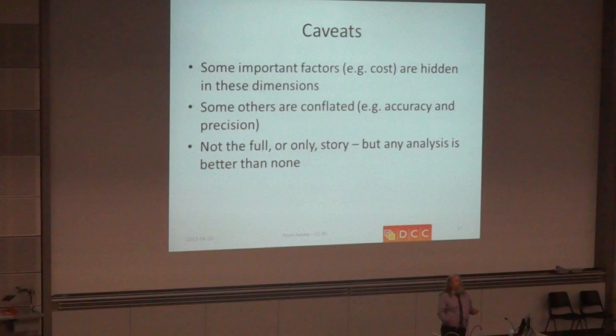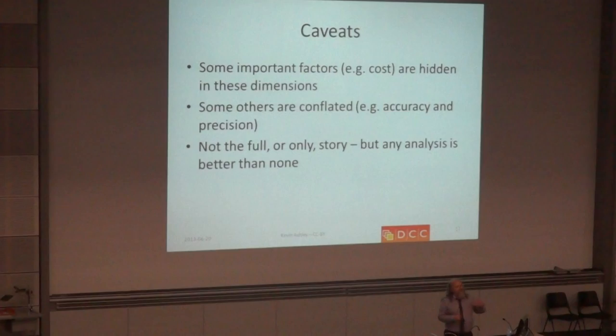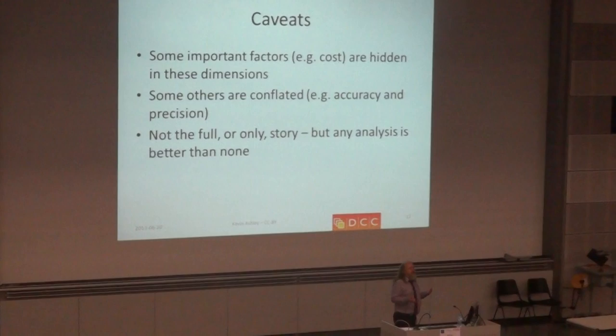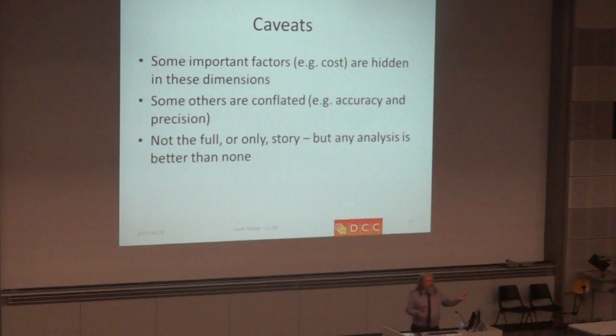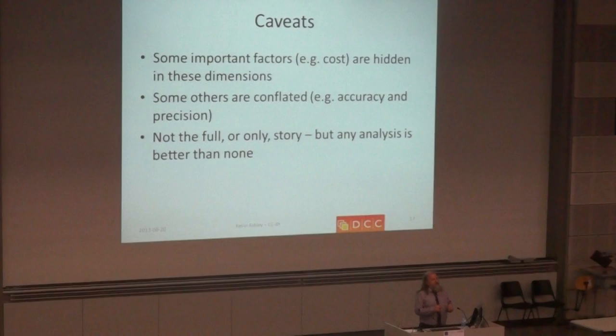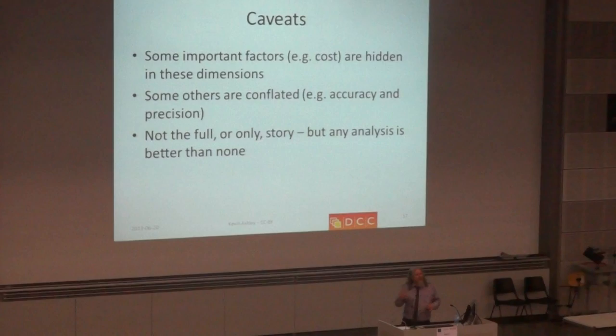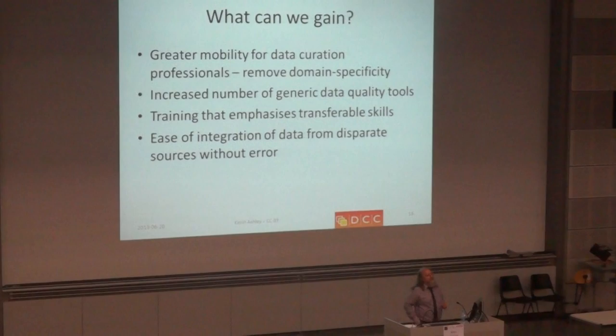Wang and Strong aren't the only people who've looked at this — others have come up with slightly different measures. And there are some important things that are hidden in that analysis. Cost actually is in there somewhere, but it's not immediately apparent. And there are some things that are conflated which, in some domains, we would say are very important to distinguish, such as the difference between accuracy and precision. But I'm going to set those small caveats aside. This is not the complete story, but it is a demonstration that we can have quality measures that are very generic and apply to all sorts of data, and they help decision-making in curation processes.